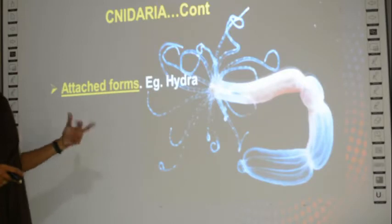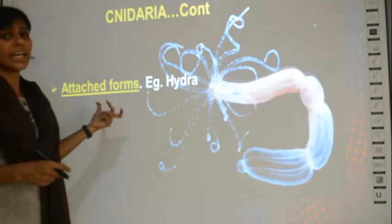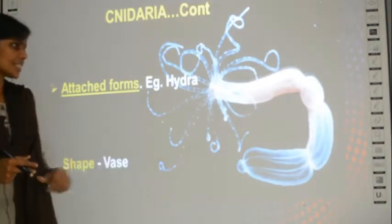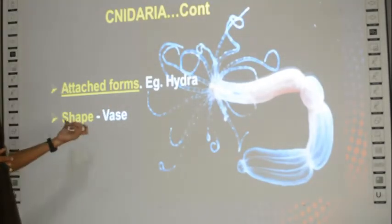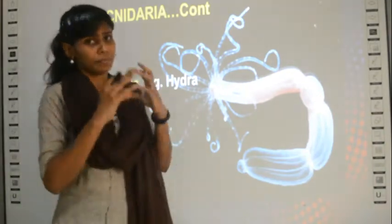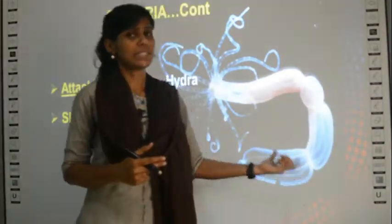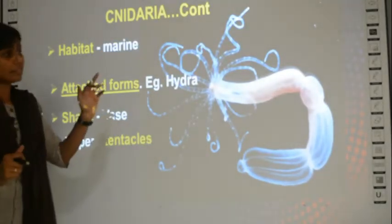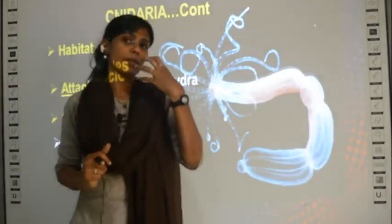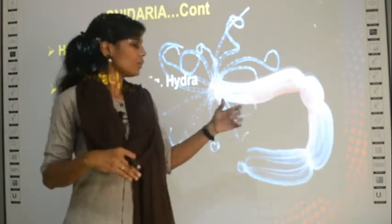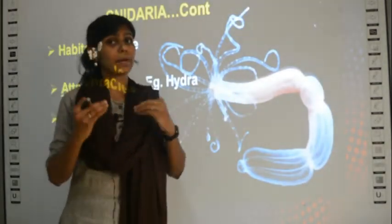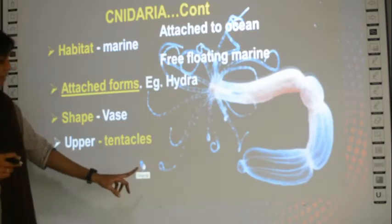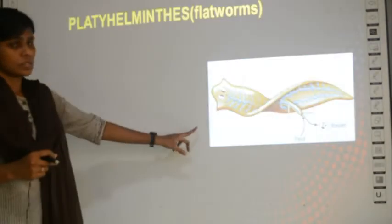Hydra is the attached form of Cnidaria - it is not free-floating like jellyfish but attached to some place. The shape of the body is like a vase, similar to a flower vase. They also have tentacles, but in hydra the tentacles are found in the upper region, whereas in jellyfish the tentacles are on the lower side.